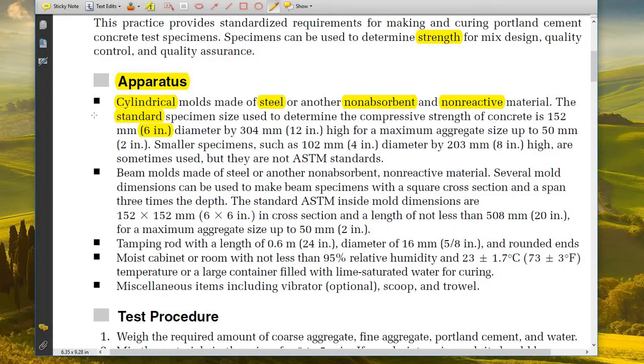For the apparatus, we are going to use cylinders. The cylinder molds should be made of steel or any other non-absorbent and non-reactive material. The standard specimen size used to determine the compressive strength of concrete is 6 inches in diameter and 12 inches in height.